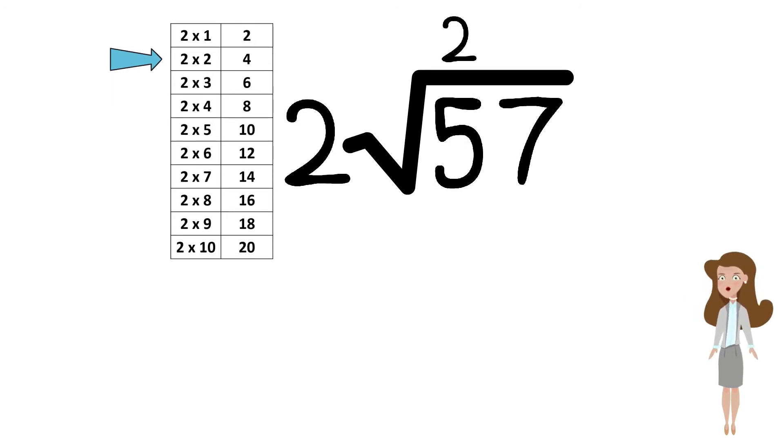Multiplying 2 by 2 gives us 4. Let's write 2 on top and the result of 4 below. Perform the subtraction and write the result of 1.